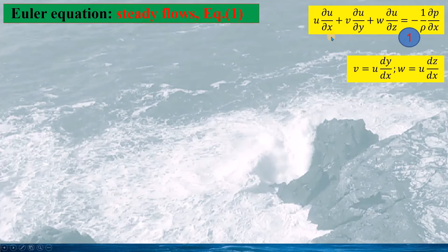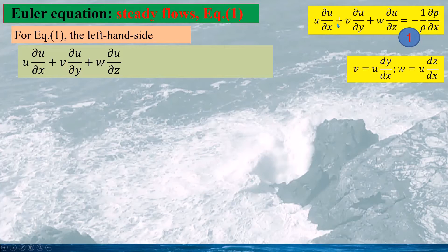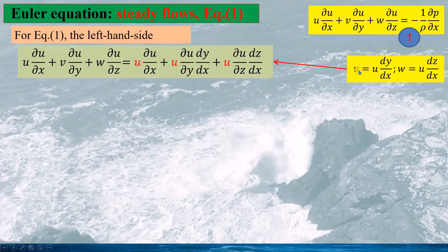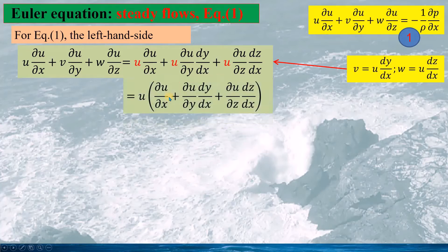Here we look at the first momentum equation in the Euler equation. We will use the streamline equation where v and w are represented by u on the streamline. Substituting v and w into the left-hand side of the first momentum equation, we can factor u out of the expression.